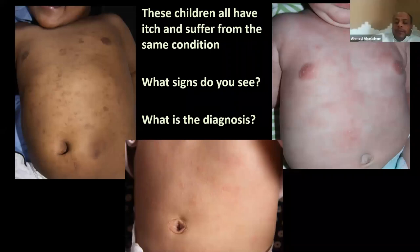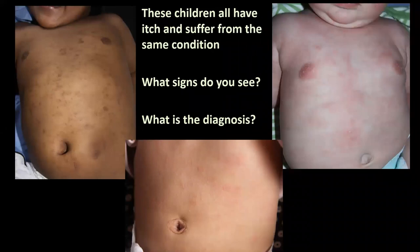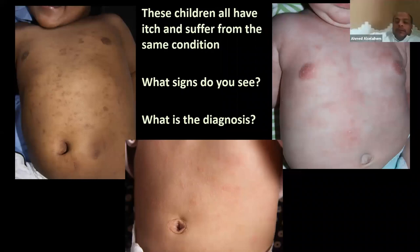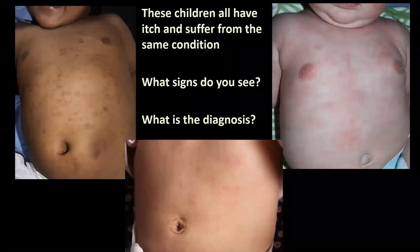Sandpaper rash, eczema. So what kind of skin lesion can you see? You can comment by typing or by voice. Atopic dermatitis, eczema, papule, macule — yes, we are in the good direction.